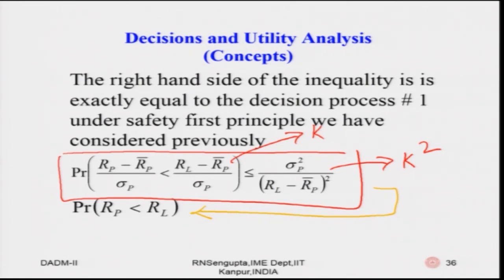Technically, Chebyshev's inequality and the safety first principle are the same when considering the normal distribution. Similarly, you can modify the first safety first principle bullet point with respect to Chebyshev's inequality, provided the first moment (expected value) and the second moment (variance) exist.